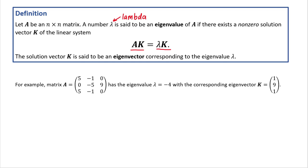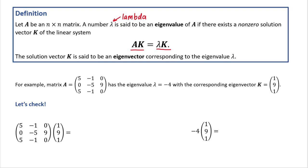To better understand this definition, let's look at an example. We're given matrix A that has the eigenvalue negative 4 and its corresponding eigenvector k. To demonstrate that these are the eigenvalue and eigenvector for the given matrix, we have to verify the definition — in other words, take matrix A, multiply it by vector k, and compare that result with the product of lambda and vector k.